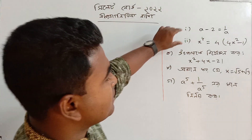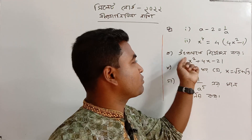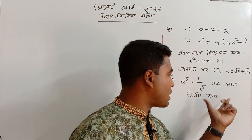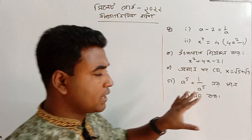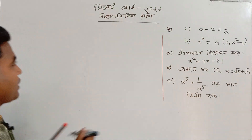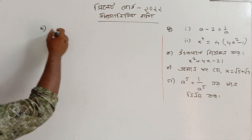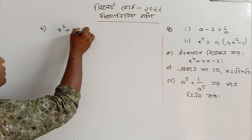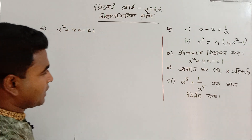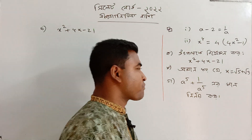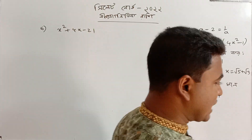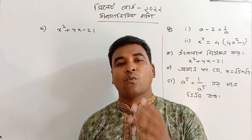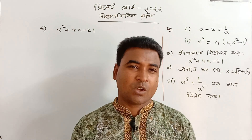The first problem is x squared plus 4x minus 21. If you have a solution for this, you will find it very helpful.